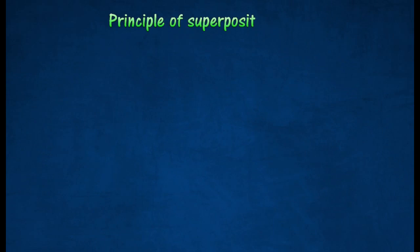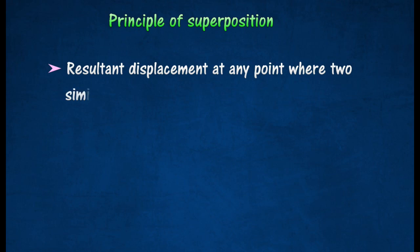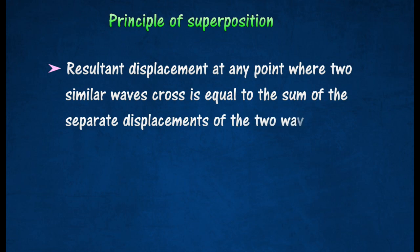The principle of superposition states that the resultant displacement at any point where two similar waves cross is equal to the sum of the separate displacements of the two waves.